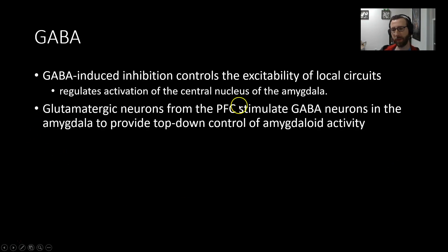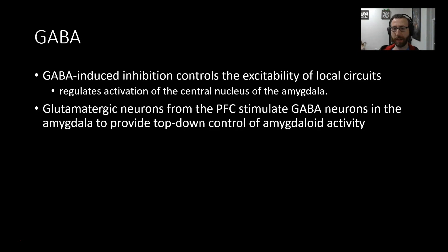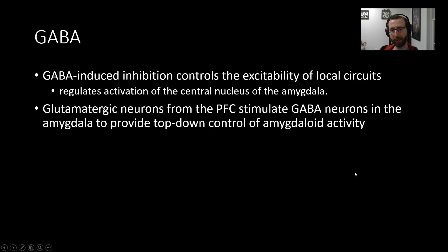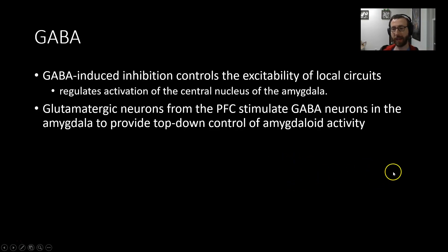Glutamatergic neurons from the prefrontal cortex stimulate GABAergic neurons within the amygdala. We have projections coming from the prefrontal cortex, reaching down into the amygdala and activating GABAergic interneurons, which serve as a local control mechanism for top-down control. This top-down influence can stimulate GABAergic interneurons, providing inhibition and control of amygdala activity.